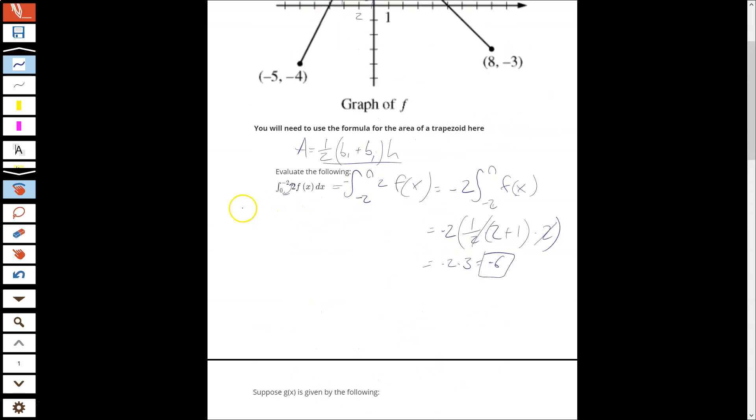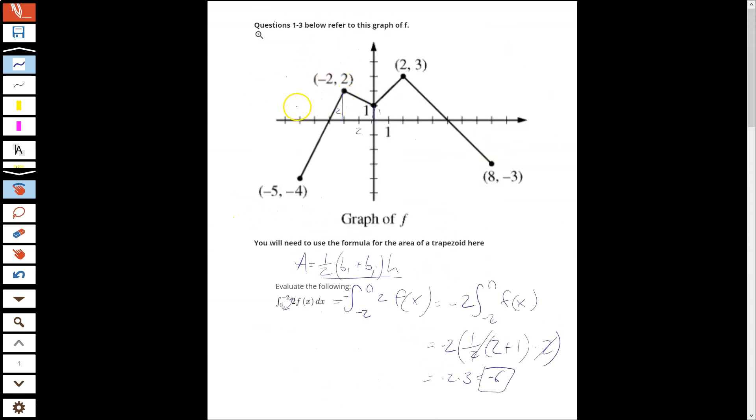So the integral from negative 5 to negative 2 is what I want. Negative 5 to negative 2. So that's going to be this region, negative 5 to negative 2. And what we should notice is we have two different shapes, and they're going to have two different signs.